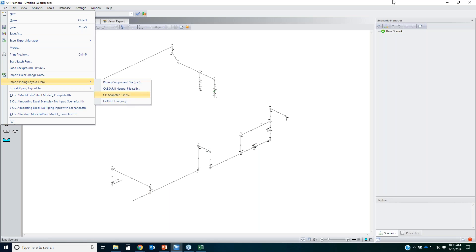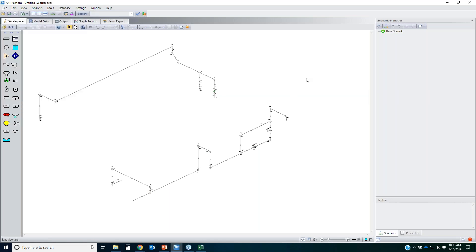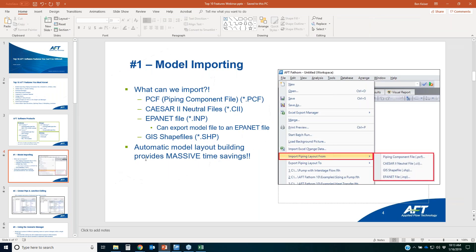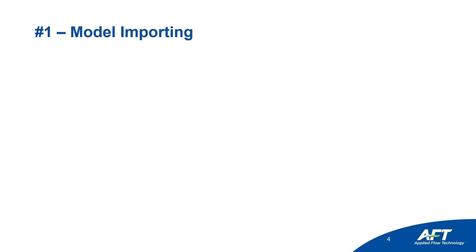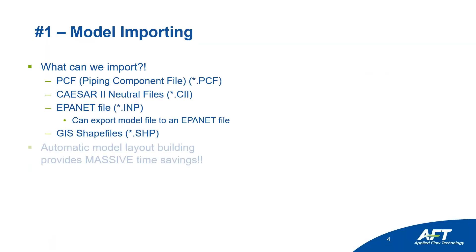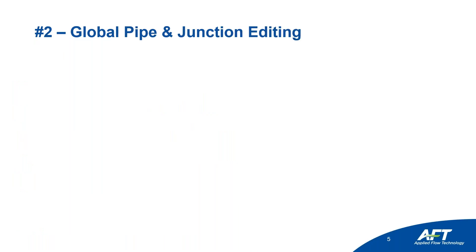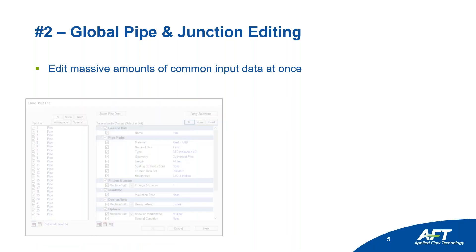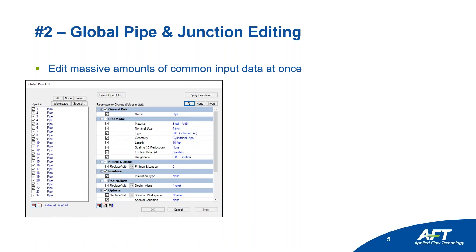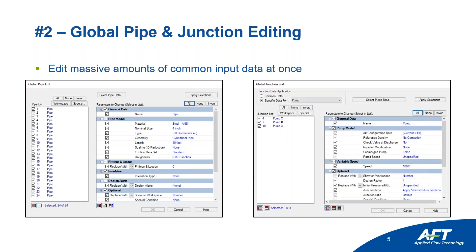The next important capability is global editing — global pipe editing and global junction editing. This allows you to edit massive amounts of information for common pieces of data all at once. You can edit multiple pieces of data for piping and multiple pieces of data for junctions simultaneously.